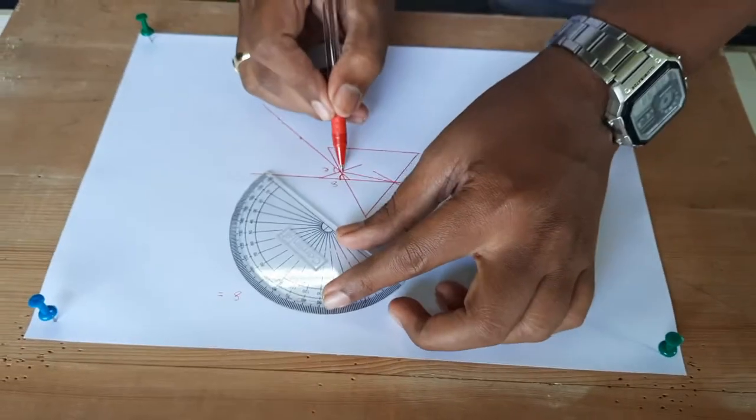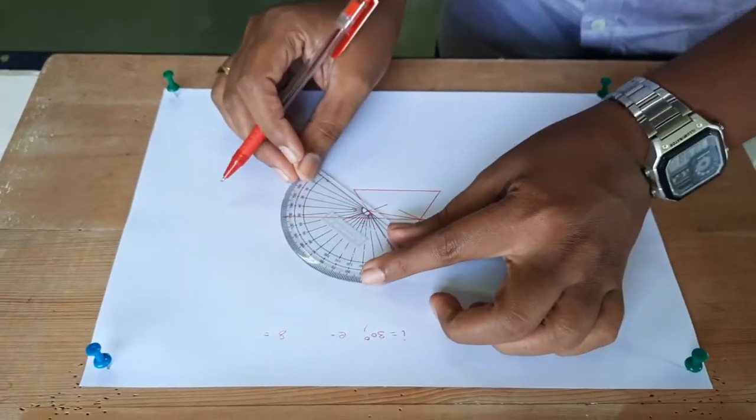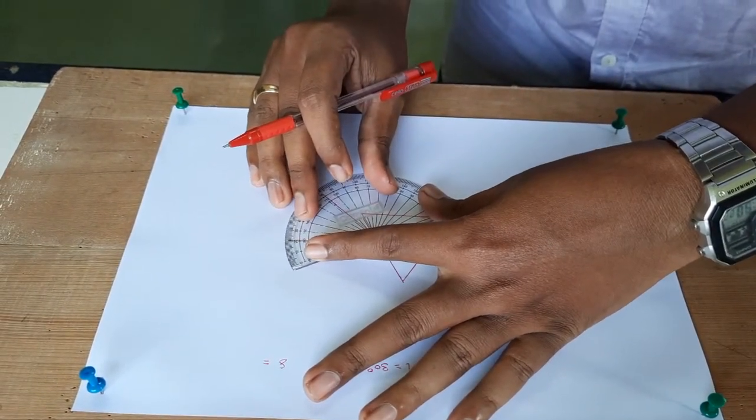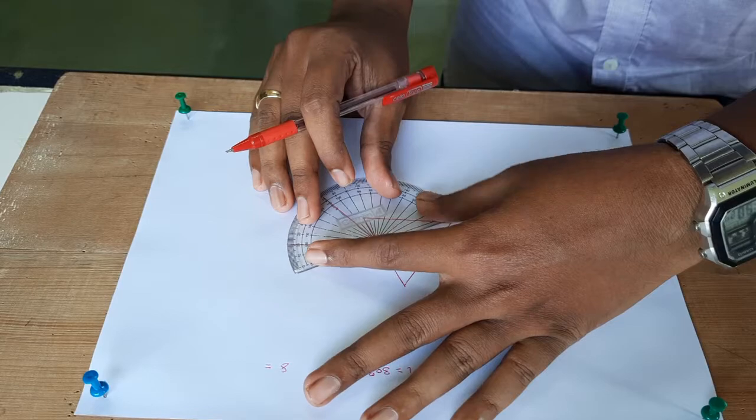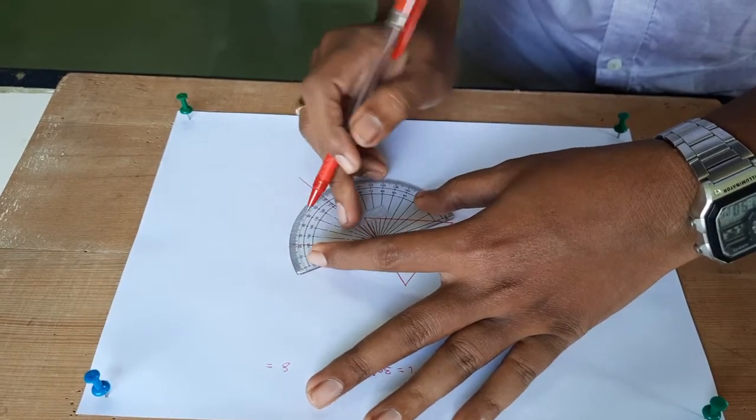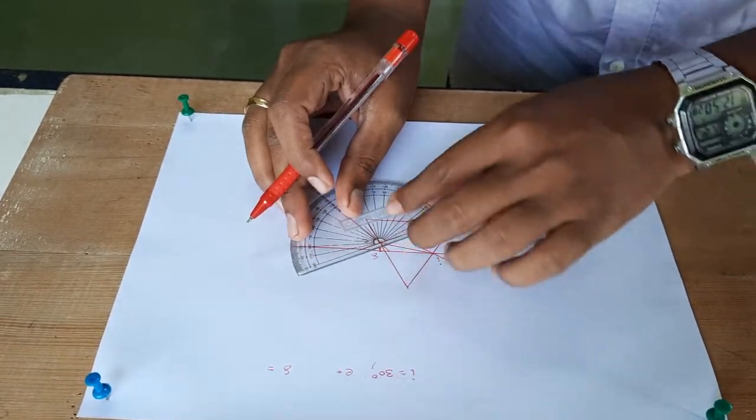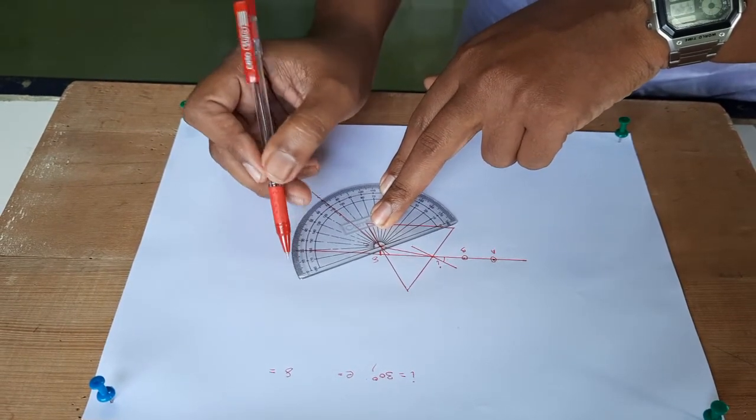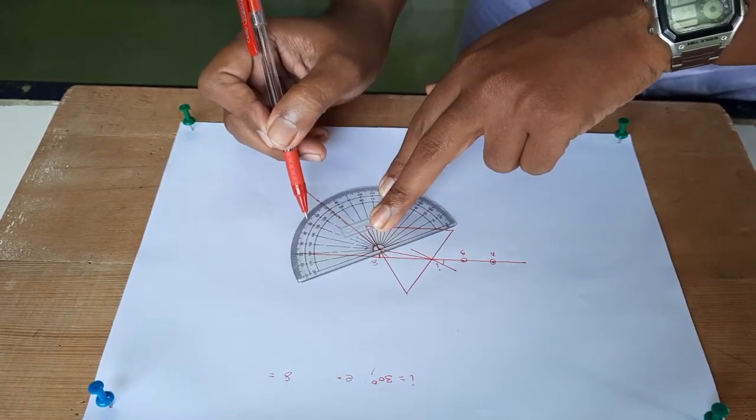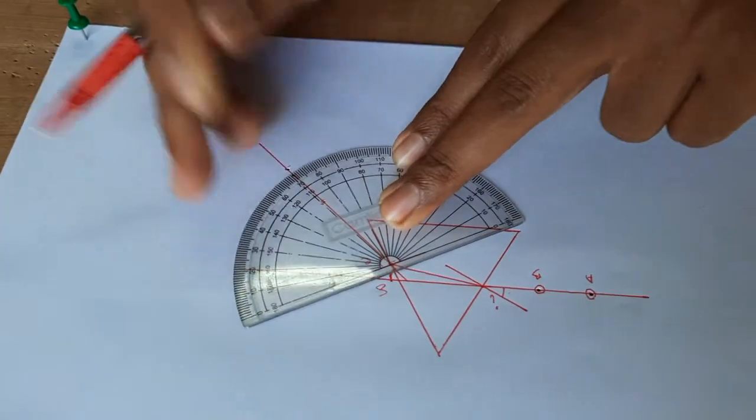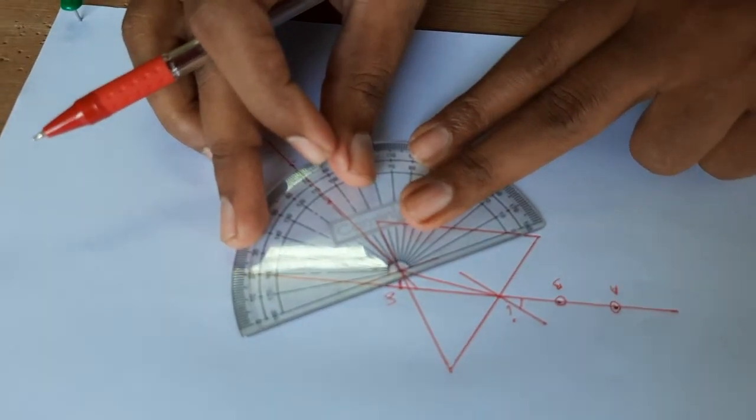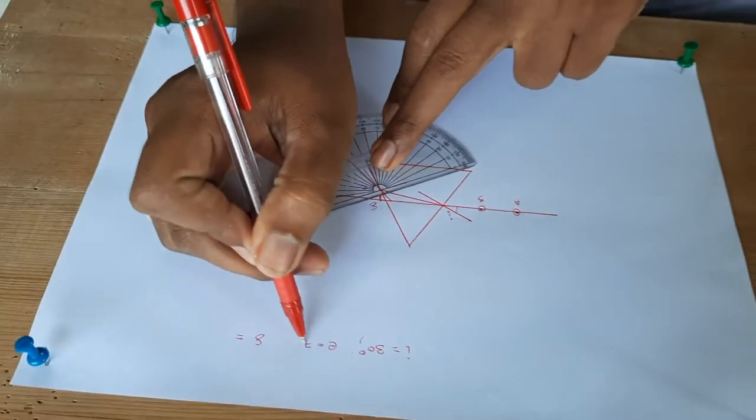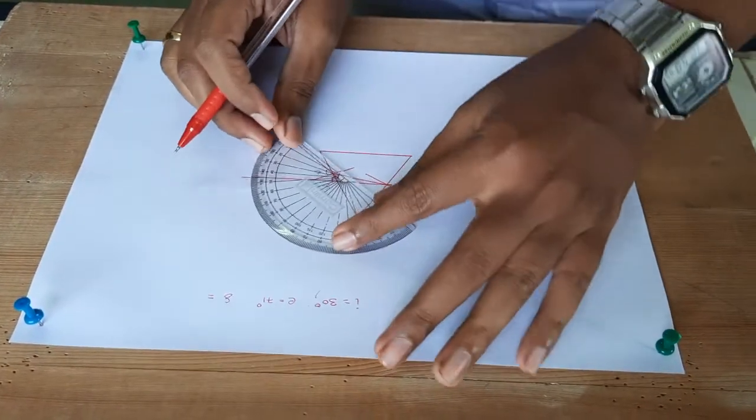Now since this is a normal, I will measure it from here taking this as the base. Now start measuring from zero and this is a line so it is around 10, 20, 30, 40, 50, 60, 70, around 71 degrees. So your angle of emergence is 71 degrees.